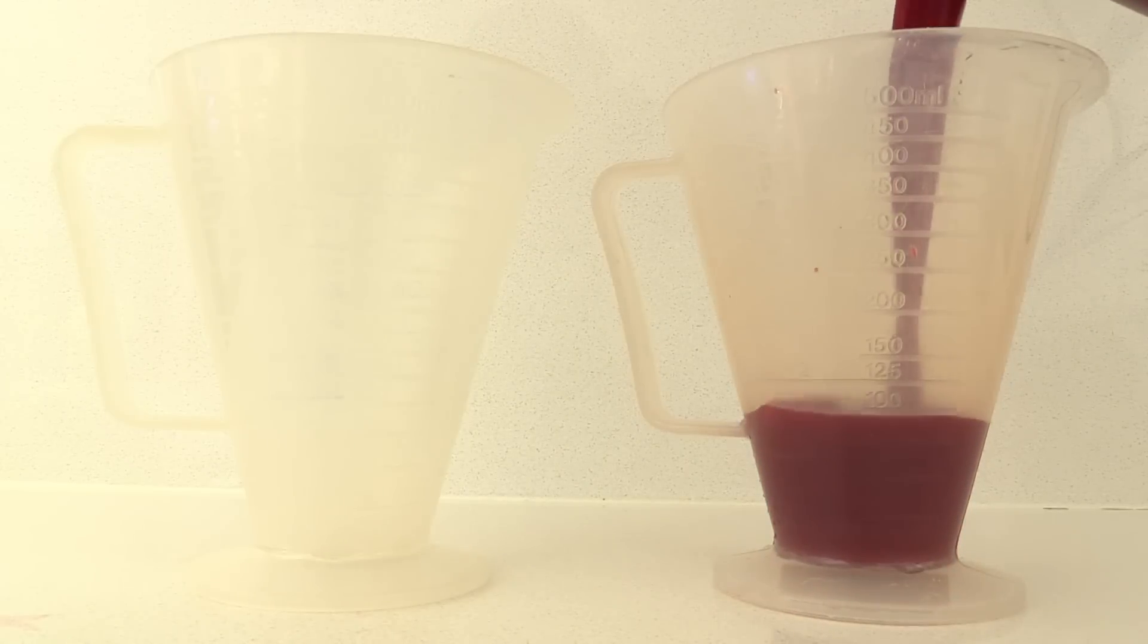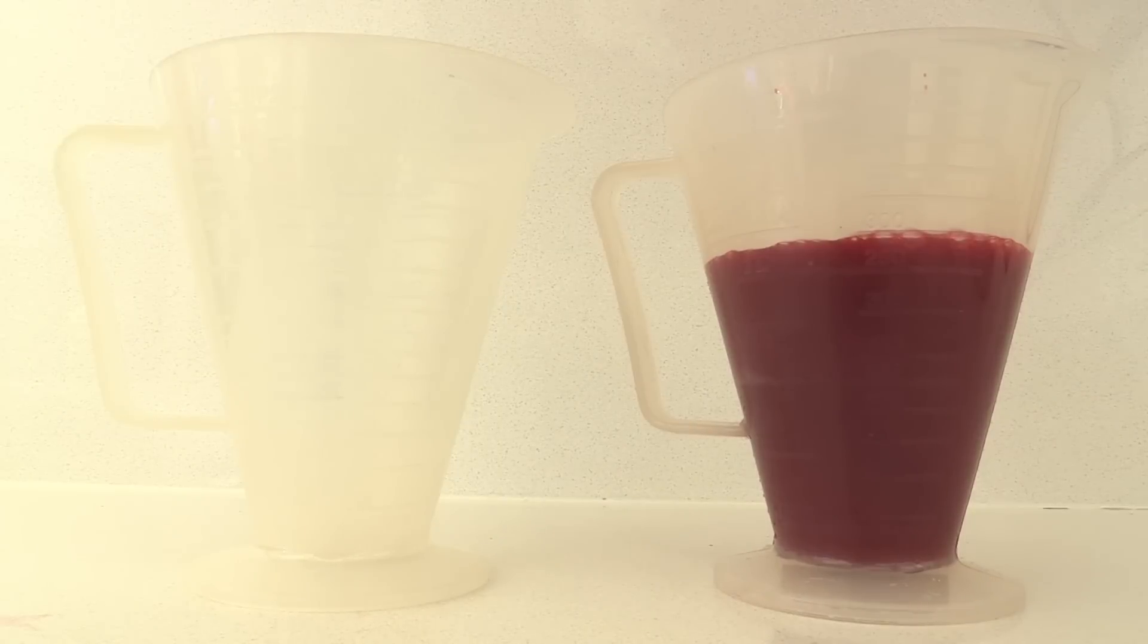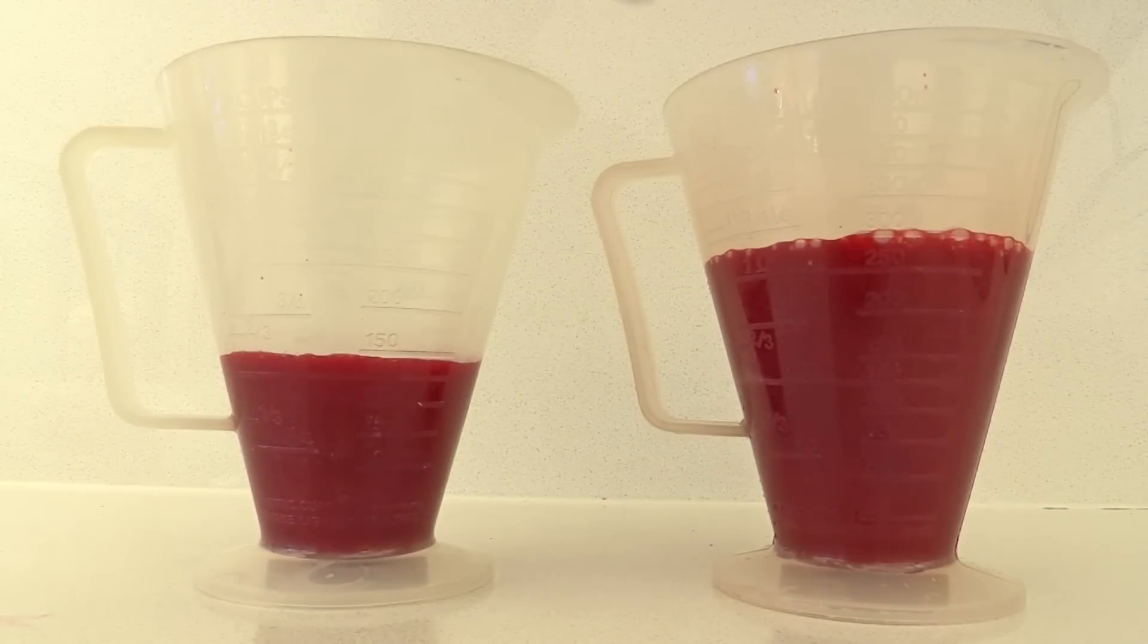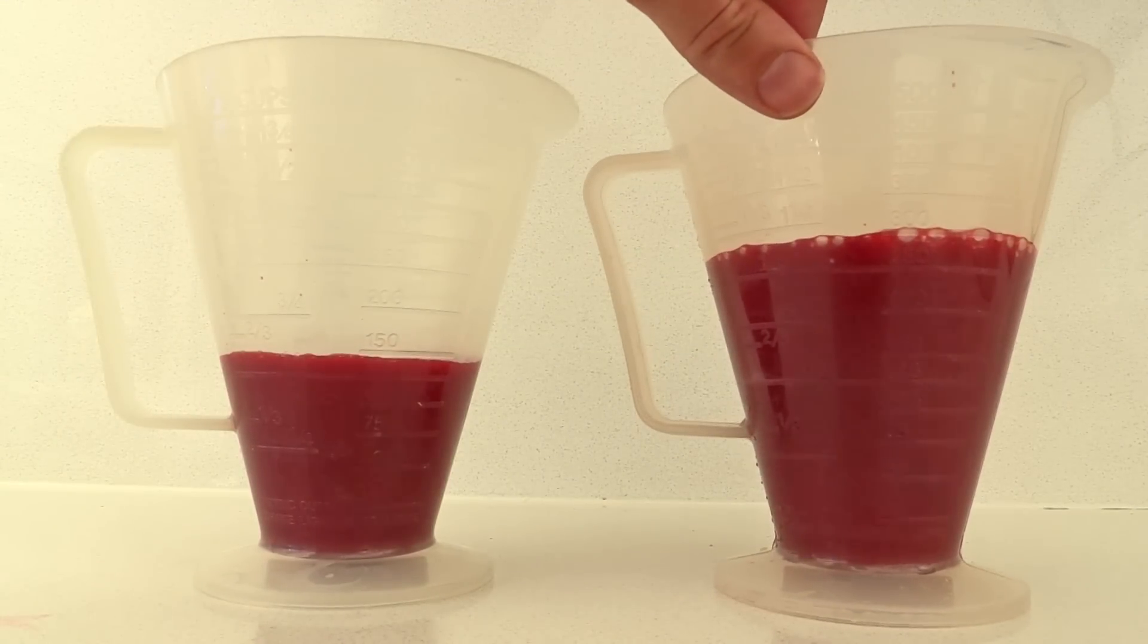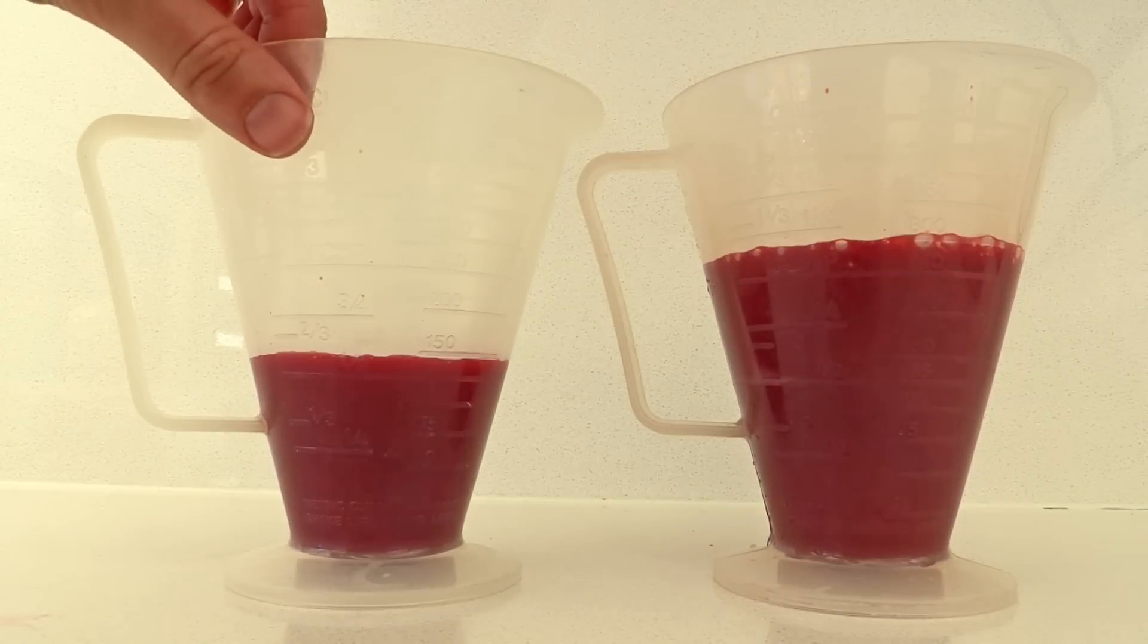Take two jugs and measure out 300ml in one and 150ml in the other. All of the recipe quantities that you need are on the website howtocookthat.net. We will use 300ml of the puree to make the mousse and the other 150ml we will use in the glaze.